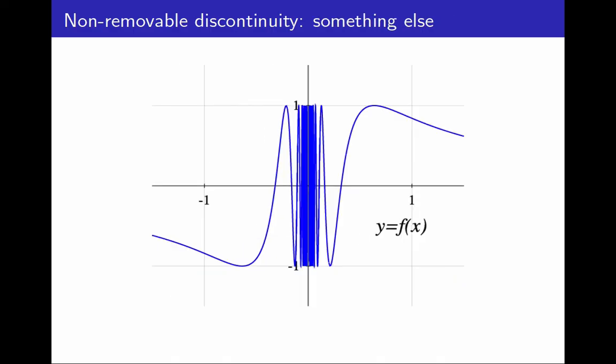And this final example does not have a limit at 0 either. It also has a non-removable discontinuity. There is no way to fix it. In short, removable discontinuities can be, well, removed. Non-removable discontinuities cannot. That is the reason for the name.